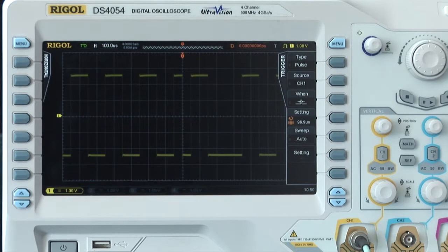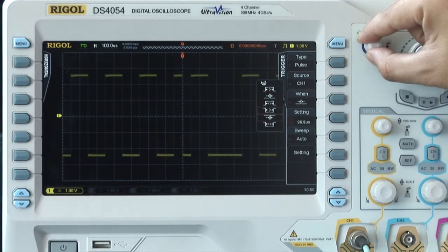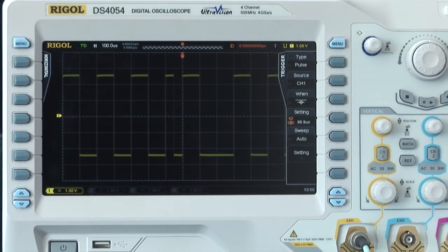For positive pulse triggers, the trigger point stays at the falling edge of the pulse. For negative pulse triggers, it stays at the rising edge.